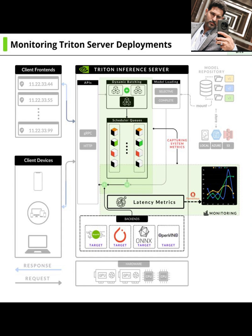Finally, we have our monitoring system. This is where all the captured system metrics and latency metrics are visualized and analyzed. You'll typically see graphs showing trends in resource usage, request rates, and latency over time. This allows you to identify potential problems, optimize performance, and ensure your AI deployments are running smoothly and efficiently. Thanks for watching.